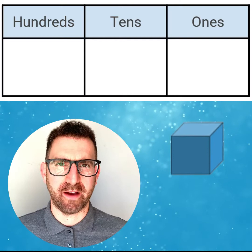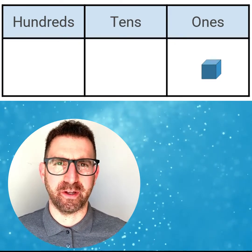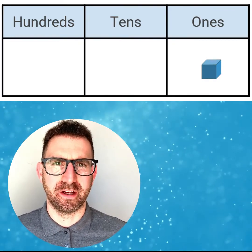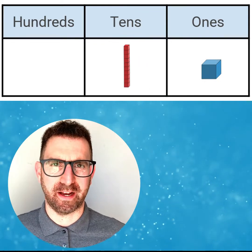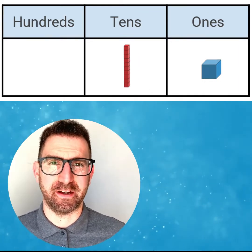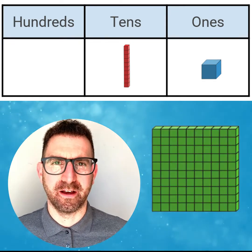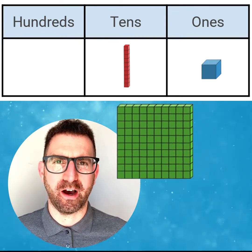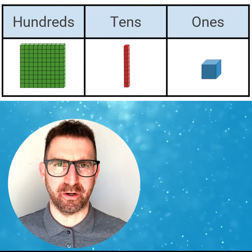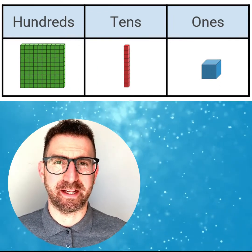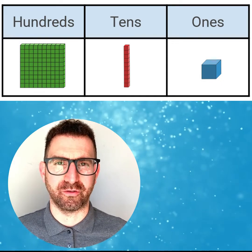Here we have a 1 cube which goes in the 1's place value. This value is 1. Next we have a 10 rod which goes in the 10's place value. It is 10 times bigger than the 1 cube. The value is 10. Then we have a 100 flat which goes in the 100's place value column. It is 10 times bigger than the 10 rod. The value is 100.